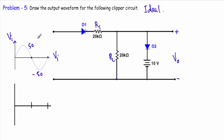Consider the case of the positive half cycle. This terminal will be positive and this terminal will be negative. The P side of diode D1 is connected with the positive terminal and the N side with the negative terminal. The input voltage is also trying to drive diode D2 in forward bias — its positive terminal is connected to the anode of D2 and negative to the cathode. So during the positive half cycle, input voltage is trying to drive both D1 and D2 into forward bias.